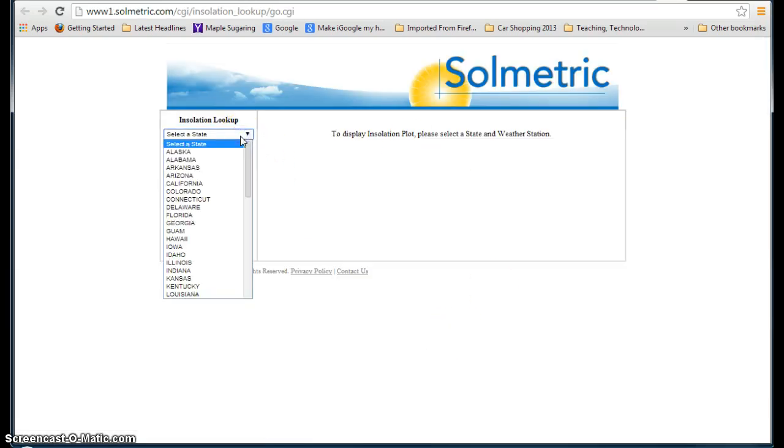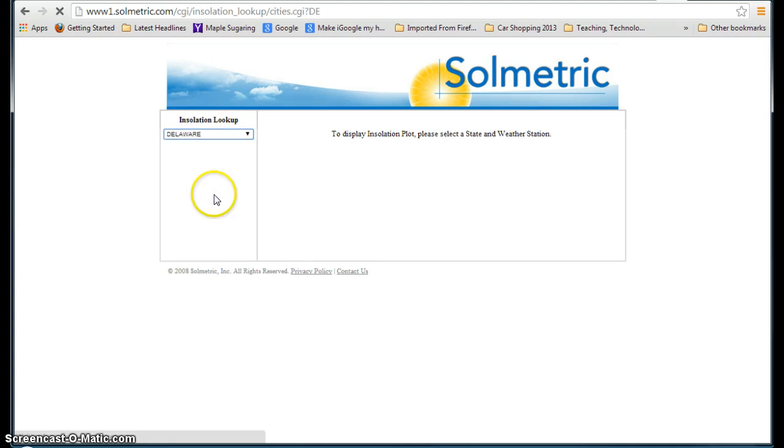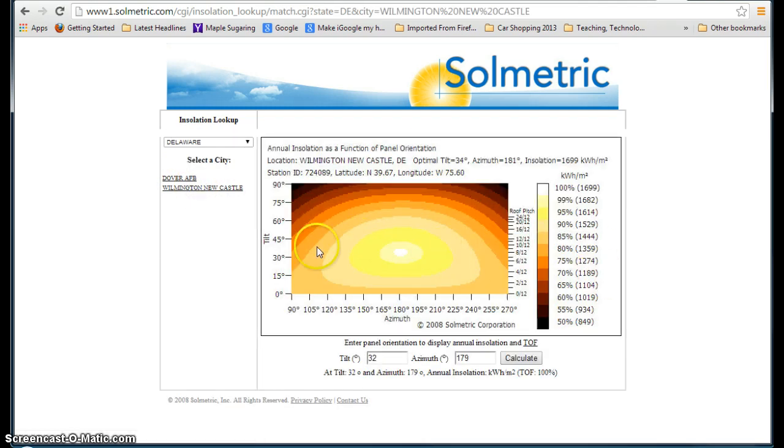So you can go anywhere you want, let's say we're looking at Newark, Delaware, so we click on Delaware. In this case, Newark is not an option, but we'll take the next best thing here. We have Wilmington, Newcastle, so we'll click on that. So this chart is specific to Wilmington, Newcastle, Delaware.